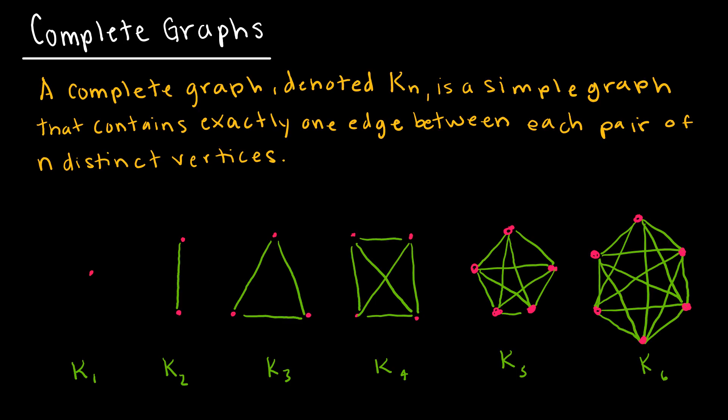Let's continue our study of graphs and take a look at some special graphs. A complete graph is one of the special kinds of graphs — notice the notation K sub n. It is a simple graph, meaning no double edges and no loops, that contains exactly one edge between each pair of n distinct vertices.